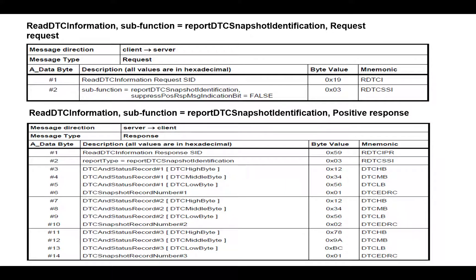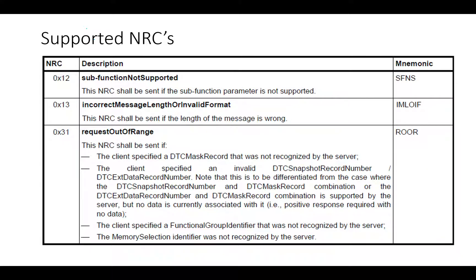Regarding the supported NRCs for this service: 0x12 — Function Not Supported; 0x13 — Incorrect Message Length or Invalid Format; 0x31 — Request Out of Range. Due to the large number of sub-functions in Service 0x19, the remaining sub-functions will be covered in upcoming videos. Thanks for watching — if you liked this video, please give it a thumbs up.